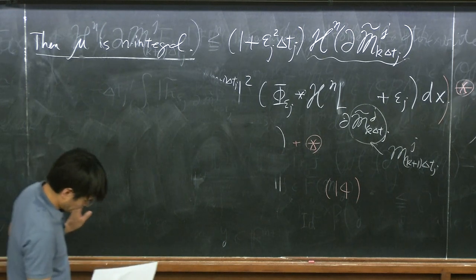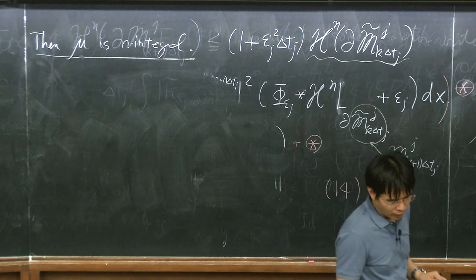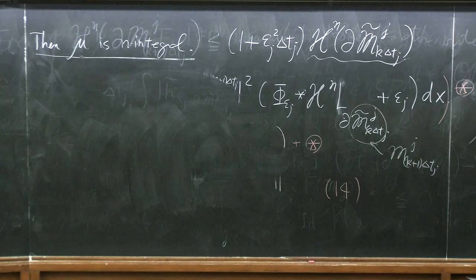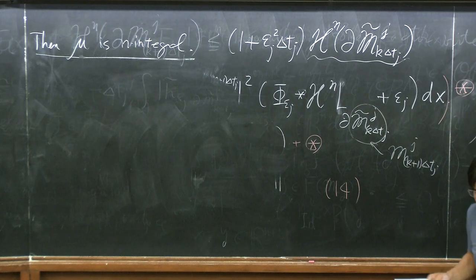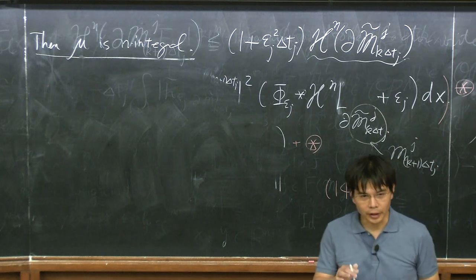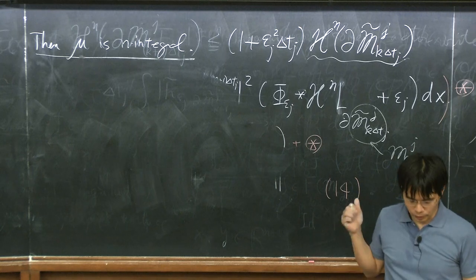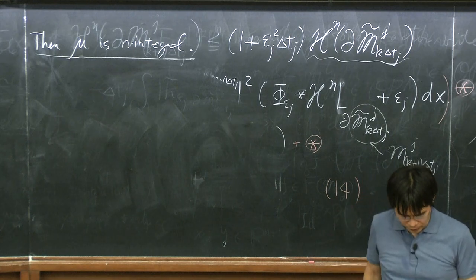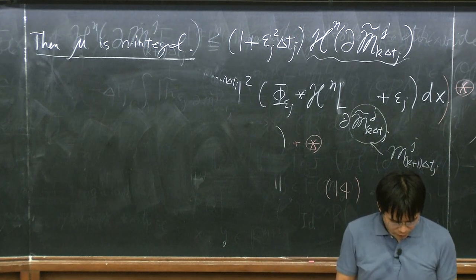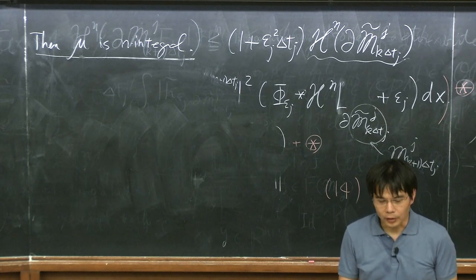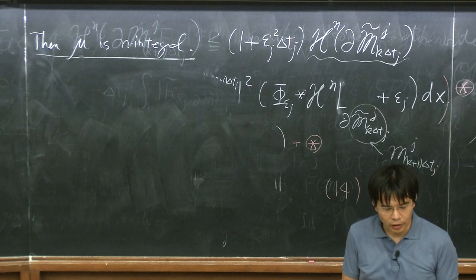Just to finish up, there are many open questions. One big question is unit density flow: this method only produces integral varifolds, but there may be some higher multiplicity. Another is analysis of tangent flow — analogous to tangent cones for minimal surfaces; there is something called a tangent flow for mean curvature flow, and we are making progress in this direction.